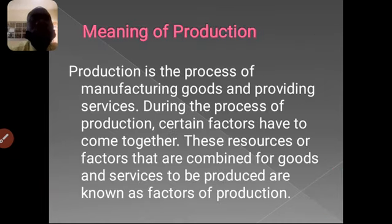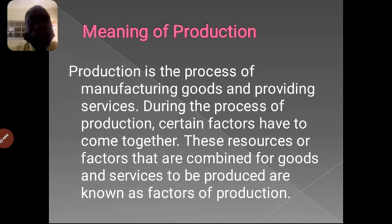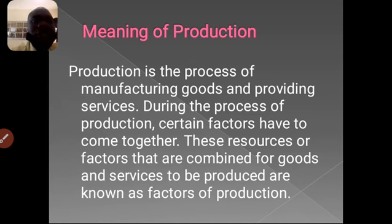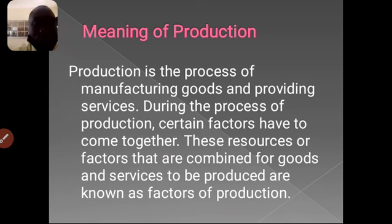Firstly, when we are talking about production, what is the understanding of production? Production is the process of manufacturing goods and providing service in agriculture to satisfy the community. During the process of production, there are some factors that we need to combine together in order to make production successful, and these factors are very important. There is no one that must be left out in the production of any agricultural products on the farm, either at the animal sector or at the crop sector.